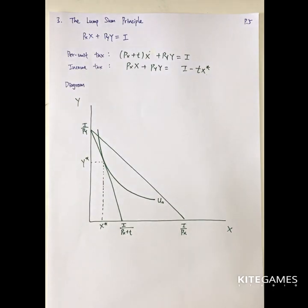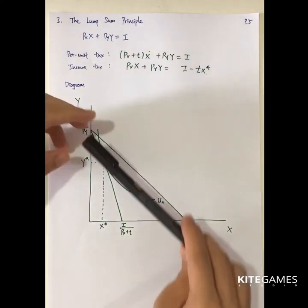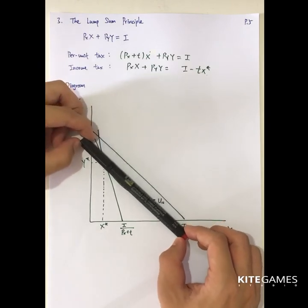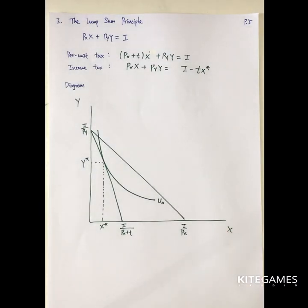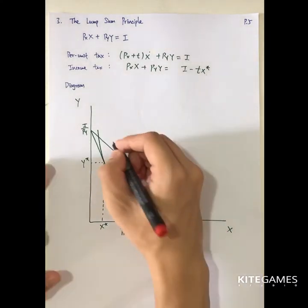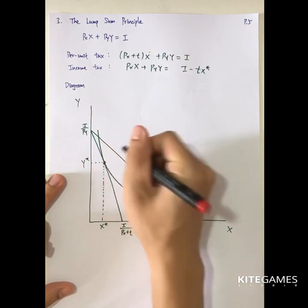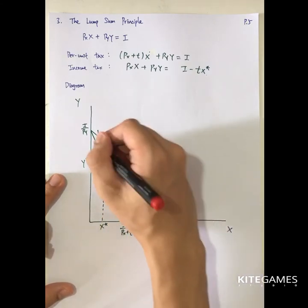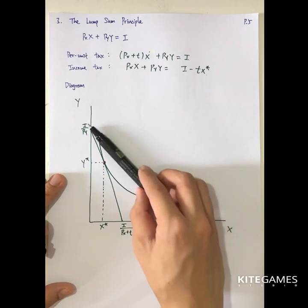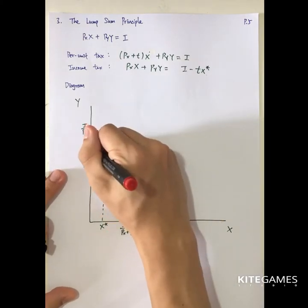Next we need to show that with the same amount of tax, the income tax is always preferred to the per unit tax. If the consumer is charged an income tax, the budget line will parallel shift inwards, because the relative price between x and y does not change. The optimal amount is here. The new budget line should cross the original consumption bundle — to show that the tax amount is the same, this will parallel shift in to here.